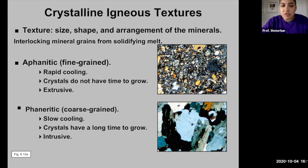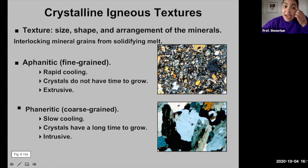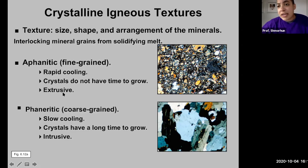The first type of texture is aphanitic, essentially fine-grained. These are minerals that you cannot see with the naked eye — you need a microscope to look at a thin section of that rock. If you see an igneous rock with aphanitic texture, you can't make out the different types of minerals without a microscope. You can infer that the rock underwent rapid cooling, meaning the crystals did not have time to grow. Aphanitic igneous rocks are essentially extrusive, meaning they formed on the surface of the earth from the quick cooling of lava.